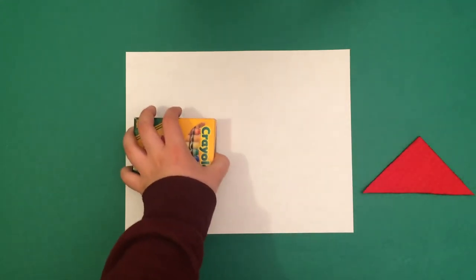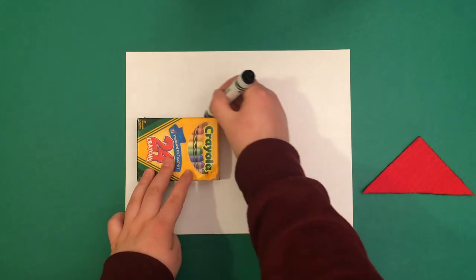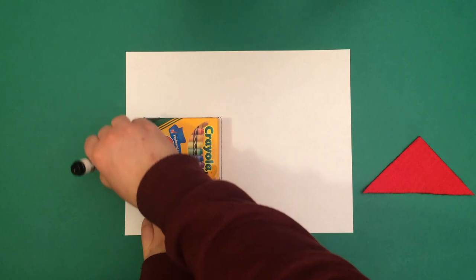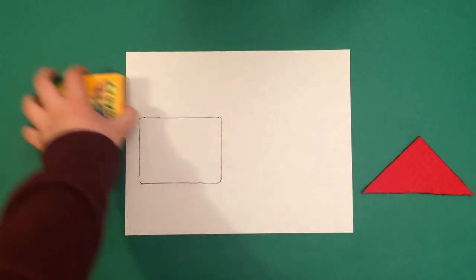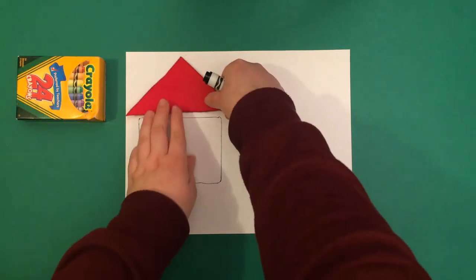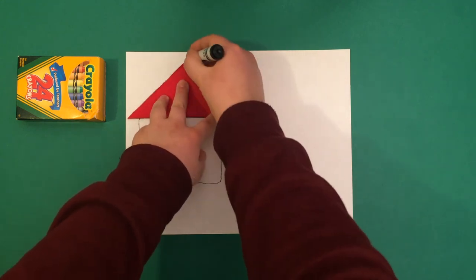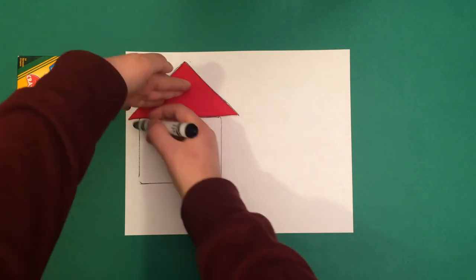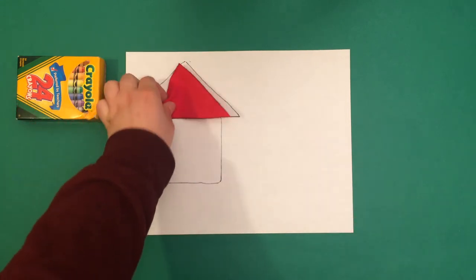For example, you could trace a square or rectangle, and then you could trace a triangle on top of it, and now it looks like a house.